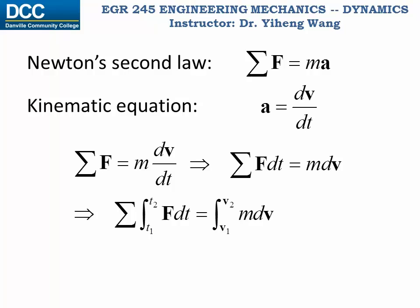On the left-hand side, the expression is integrated from initial time t₁ to final time t₂. On the right-hand side, the expression is integrated from initial velocity v₁ to final velocity v₂, and the right-hand side equals mv₂ minus mv₁, since m is a constant. We can now define a new parameter.